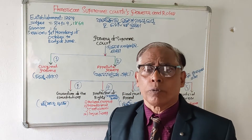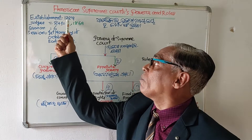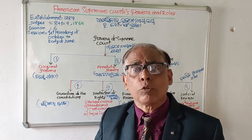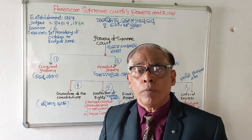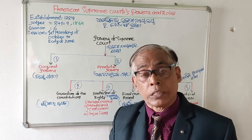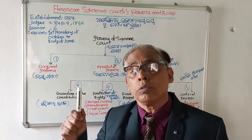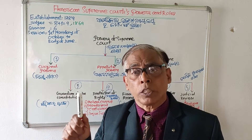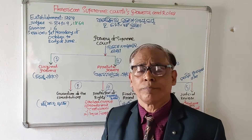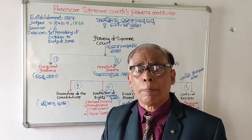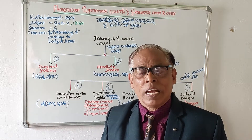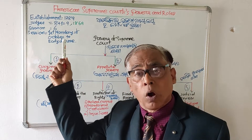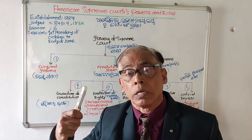The American Supreme Court was established in 1789, and when it was established, its strength was 5. But from 1869, the strength increased to 9 — comprising 1 Chief Justice and 8 Associate Justices. The quorum of the American Supreme Court is 6, and it has only one session, which starts from the first Monday of October and continues up to early June.